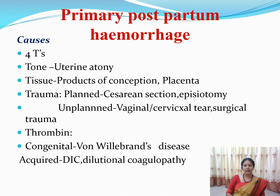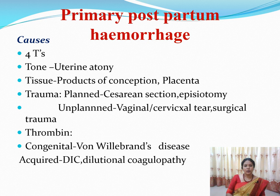For easy remembering, the causes of primary PPH can be remembered under four T's: Tone, Tissue, Trauma, and Thrombin. Tone refers to uterine atony — inadequate contraction of the uterine muscles. Tissue means retention of products of conception such as fetal tissues, membranes, placenta, or placental lobes remaining inside the uterus after delivery. Trauma includes any form of injury such as bleeding from a caesarean site, episiotomy wound, or cervical/vaginal scar. Thrombin refers to clotting abnormalities.